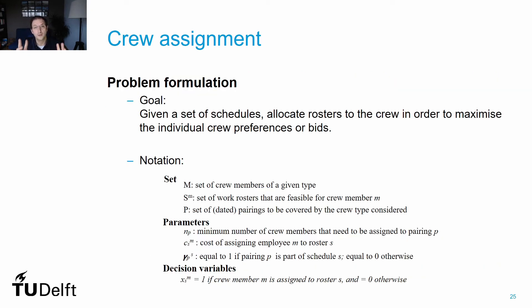As discussed in the previous video, there are two different approaches to the crew assignment problem: the rostering approach, in which a full roster is assigned to individual crew members, and the bid line approach, in which lines of pairings are constructed and presented to crews to express their preference in terms of biddings. In general terms, nevertheless, the crew assignment problem for these two approaches is very similar. The goal is to select the best allocation of pre-computed rosters or bid lines to crew members, such that we maximize crew satisfaction or minimize an equivalent cost of not respecting crew preference or bid.